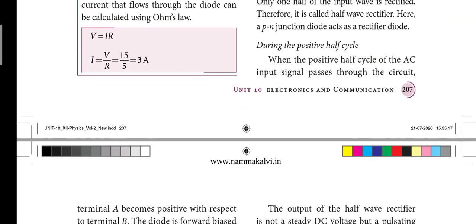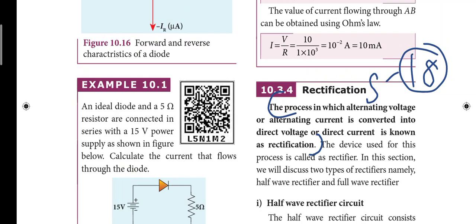Next, page number 207. Rectification definition. The line is in black letters. That is the 18th short answer.